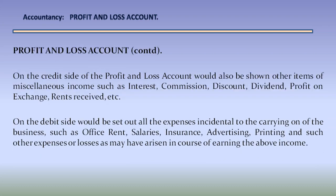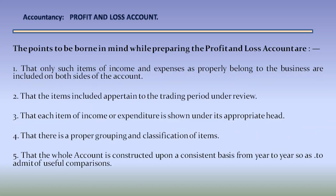On the credit side of the profit and loss account would also be shown other items of miscellaneous income such as interest, commission, discount, dividend, profit on exchange, rents received, etc. On the debit side would be set out all the expenses incidental to the carrying on of the business such as office rent, salaries, insurance, advertising, printing and stationery, and all other expenses.